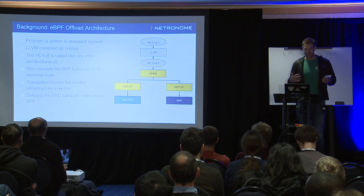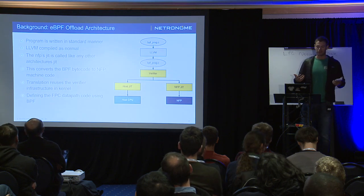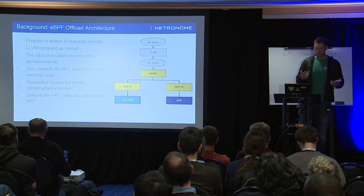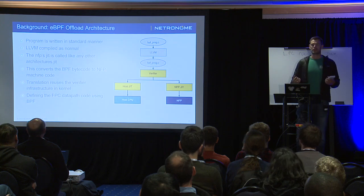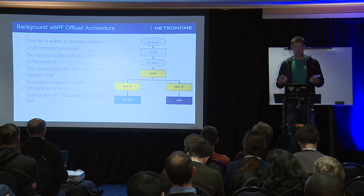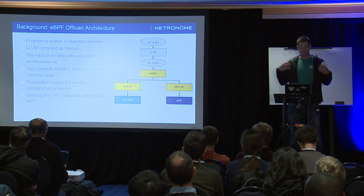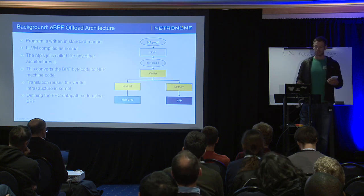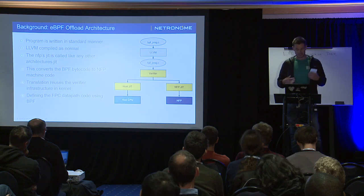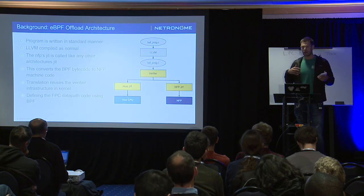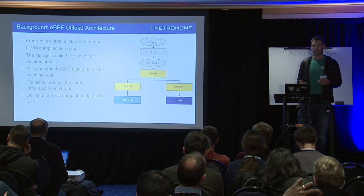This is a quick overview of the offload architecture — some of you may have seen this slide before. About two and a half years ago Kuba posted the first patches for this, which allowed us to actually offload BPF to the NIC. We upstreamed an NFP BPF JIT into our driver. The JIT is used like any other architecture's JIT — we compile the BPF bytecode to our NFP machine code. And through things like BPF tool and other infrastructure, you can actually inspect the assembler code you're generating and debug it.